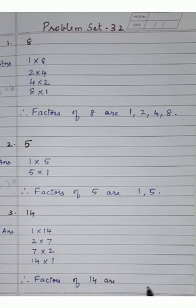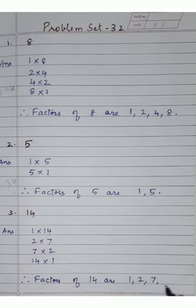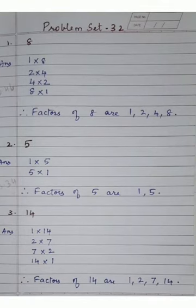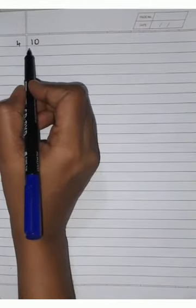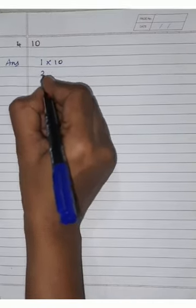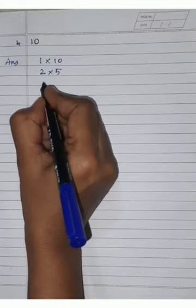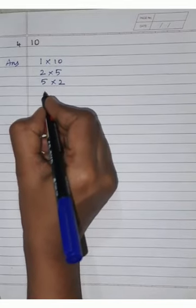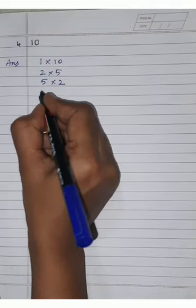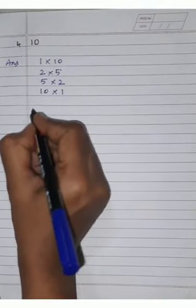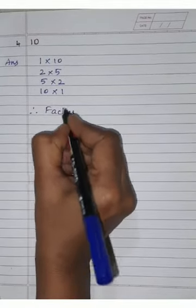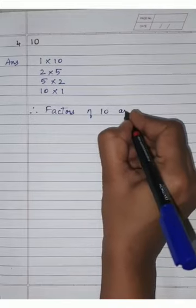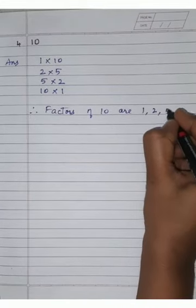Therefore factors of 14 are 1, 2, 7, 14. Our fourth question is to find the factors of 10. In the 1 times table: 1 × 10 = 10. In the 2 times table: 2 × 5 = 10. Three and four tables are not coming. 5 × 2 = 10. Six, seven, eight, and nine tables are not coming. 10 × 1 = 10. Therefore, factors of 10 are 1, 2, 5, 10.